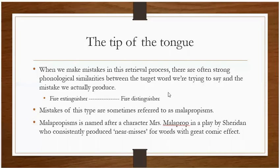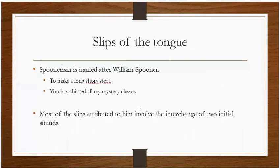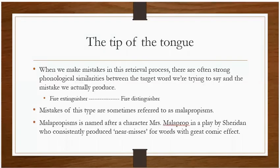Mistakes of this type are sometimes referred to as malapropism, named after a character called Mrs. Malaprop from Sheridan's play. Mrs. Malaprop would produce these 'near misses' — almost reaching the right word but picking the wrong one — which created a comic effect.